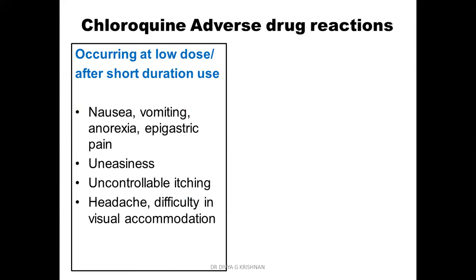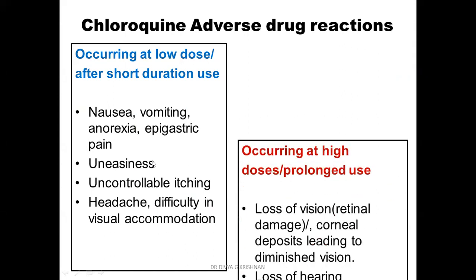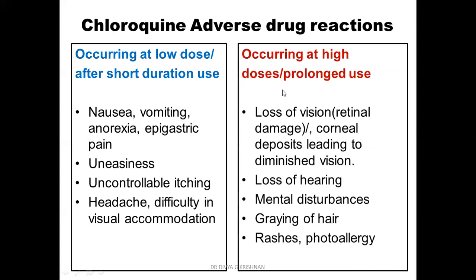The adverse drug reactions of chloroquine can be classified as those occurring at low doses or short duration of use, and those at high concentrations or prolonged use. At low/usual doses: nausea, vomiting, anorexia, epigastric pain, uneasiness, uncontrollable itching, headache, and difficulty in visual accommodation. At high doses or prolonged use: loss of vision, loss of hearing, mental disturbances, graying of hair, rashes, and photoallergy.